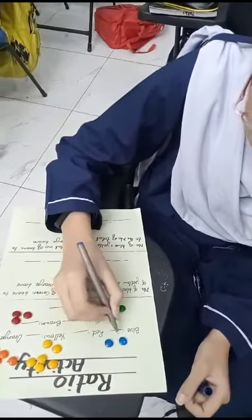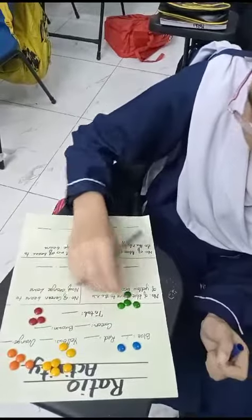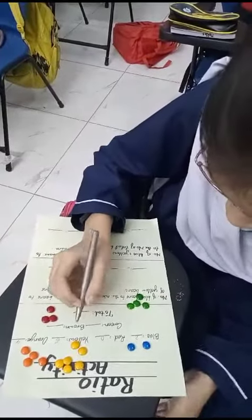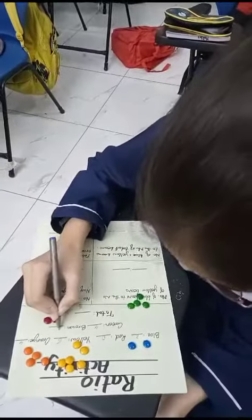How many are blues? Two. How many are red? Yellow. How many are yellow? Six. How many are orange? Four. How many are green? Four. And how many are brown? Three. Three.